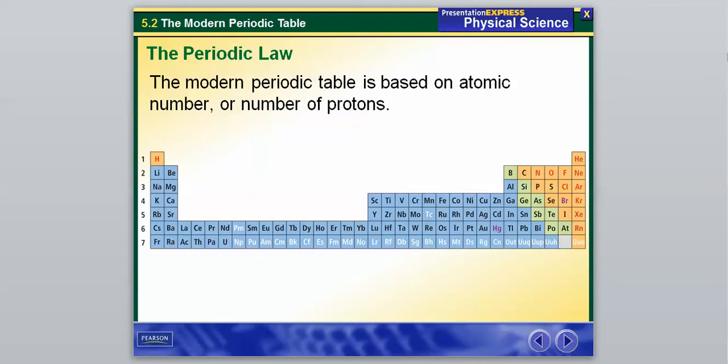So the modern periodic table is based on atomic number, or number of protons, so that's the third time already they've said that. So I'd say that's definitely something you need to write down here. And as you can see, hydrogen, that's going to be our element with the fewest number of protons, followed all the way over here by helium, and then we're going to have lithium, and so on. It's just going to keep getting bigger as we move from left to right and from top to bottom.